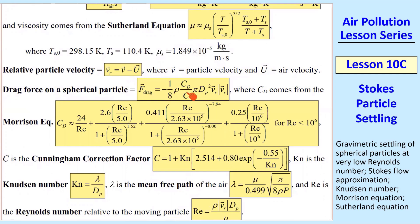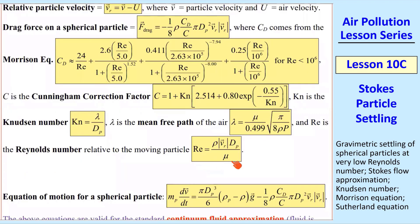We also had equations for drag on a particle. We have the Cunningham correction factor included, and we have the drag coefficient in terms of Morrison's equation, which is a function of Reynolds number. We also have this equation for the Cunningham correction factor, Newton's number, lambda mean free path, and Reynolds number.